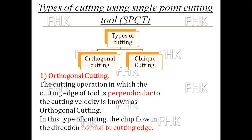All the cutting processes in machining are broadly classified as orthogonal cutting and oblique cutting. Whether you are cutting the material on a lathe machine, drilling machine, shaper, or milling machine — all cutting processes with the help of a single point cutting tool are broadly classified as per these two categories: orthogonal cutting and oblique cutting.